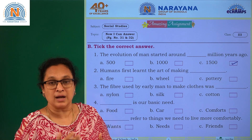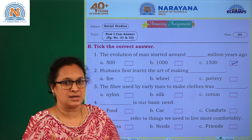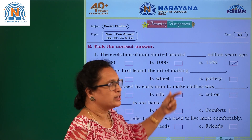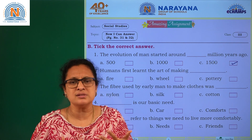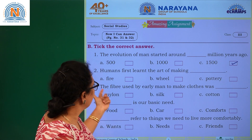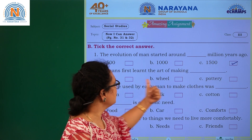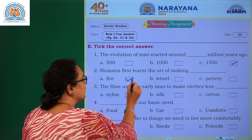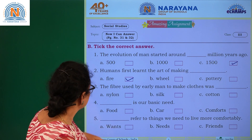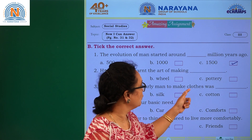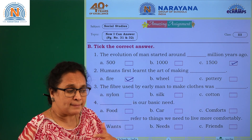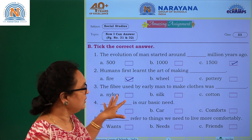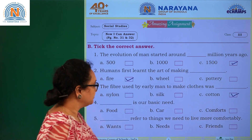Human first learned the art of making what? The options are fire, wheel, and pottery. All three were invented by humans, but humans first learned how to make fire by rubbing stones together. Coming to the next one: the fiber used by early man to make clothes was cotton — nylon and silk are not the answer.